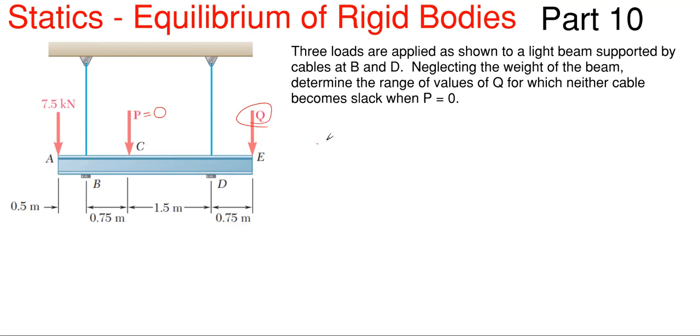So if we sum moments about point B equaling to 0 for equilibrium, this will give us a point for Q or a value for Q such that DY will be equal to 0 if we assume DY is this way and BY is this way, trying to pull this thing back in tension.